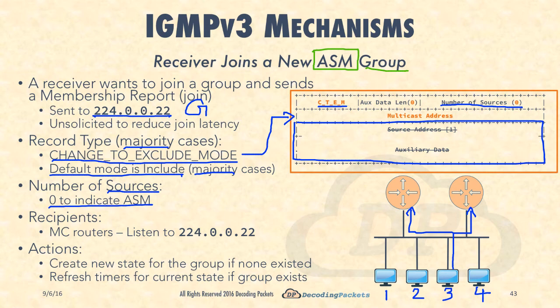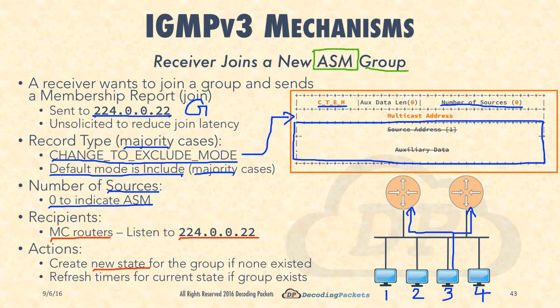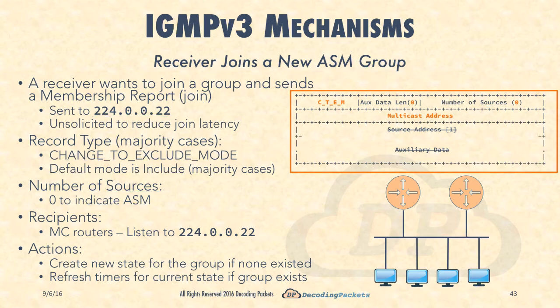The recipients are different from version 1 and 2, where all multicast hosts listening to that group received this message. Now the recipients are only multicast routers, receiving it because they listen to the IGMP version 3 well-known group 224.0.0.22. Their actions are straightforward: either create new state for the group if none existed before, or if the state already existed, refresh the timer - meaning the state will not now expire. That is how a receiver joins an ASM group.